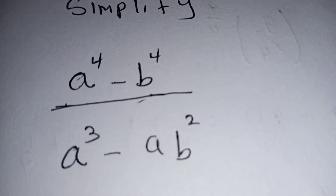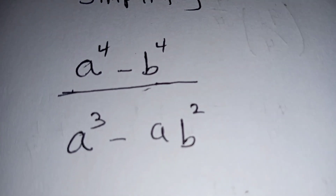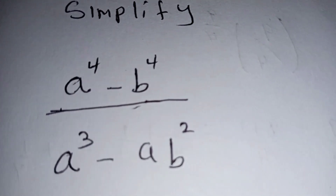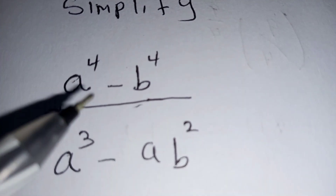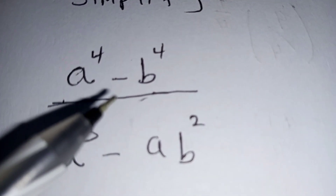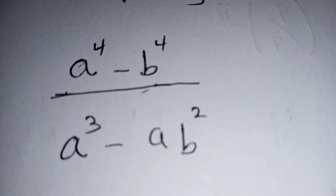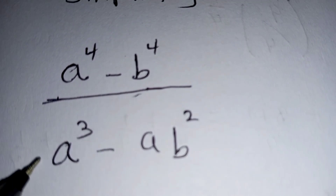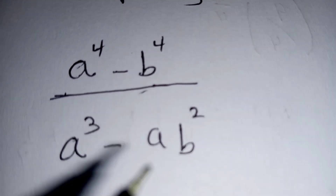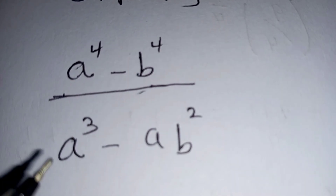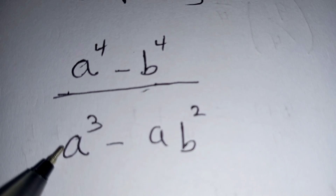Hello, welcome to study of algebra. We are going to simplify this algebra expression: a power 4 minus b power 4, divided by a cubed minus a multiplied by b squared.